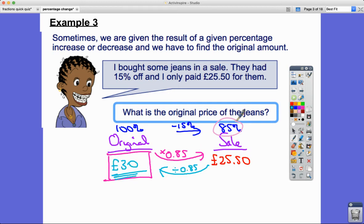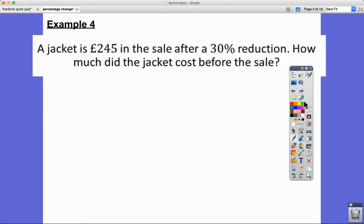Let's go and look at one more example. Example four. A jacket is £245 in the sale. Again, I'm going to draw this out. So £245 in the sale after a 30% reduction.